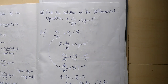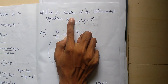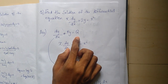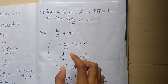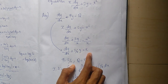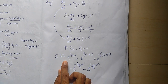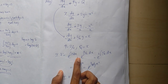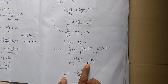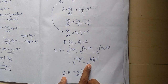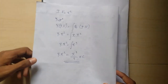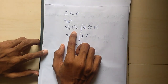Friends, now we apply the initial conditions. We use the formula dy by dx plus Py equals Q, find the integrating factor e raised to integral P dx, then apply y into integrating factor equals integral of Q into integrating factor.